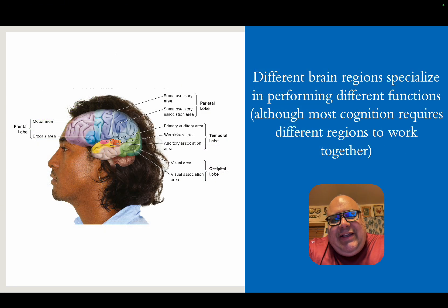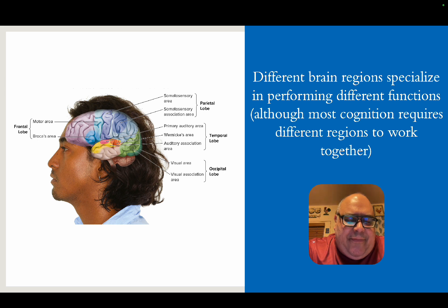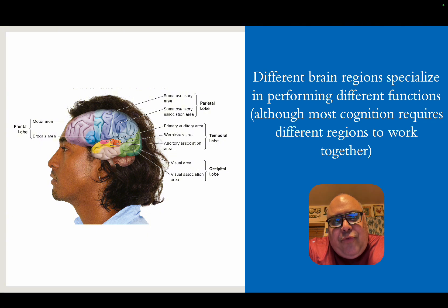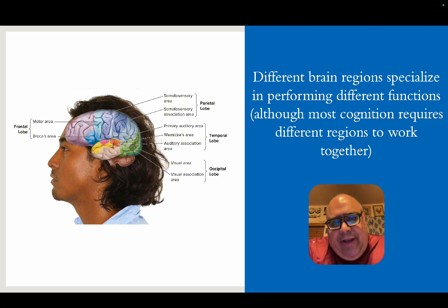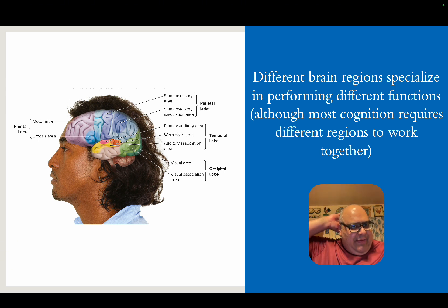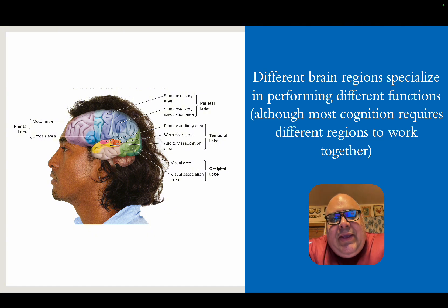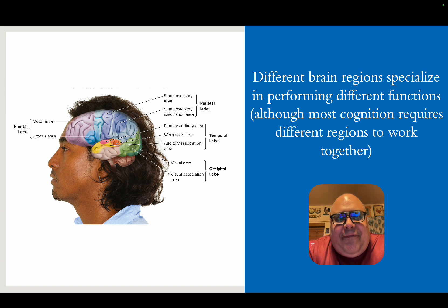Different brain regions specialize in performing different functions — they're not interchangeable. As you can see from the graphic, the front part of our brain is in charge of motor functions: movement, standing up, sitting down, writing, typing, playing an instrument. That behavior is governed by the prefrontal cortex, right above our eyeballs. Vision, as another example, is governed by the part of the brain at the back of our head. The key takeaway is that different areas of the brain specialize in different functions.